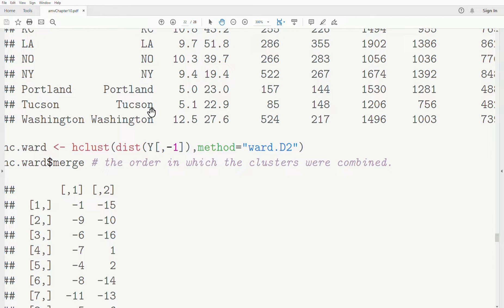Notice we remove the first column, which is city, because it's not continuous, and we're only considering continuous variables in this playlist. And we say method ward.